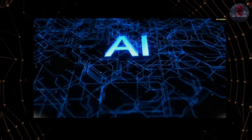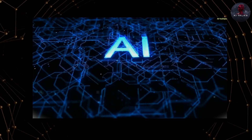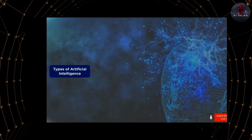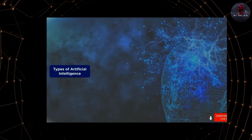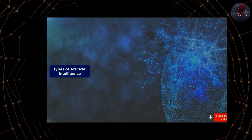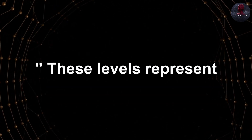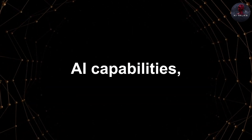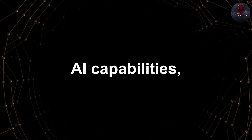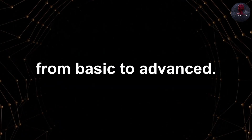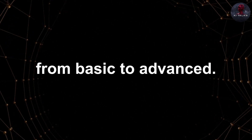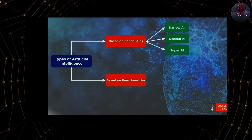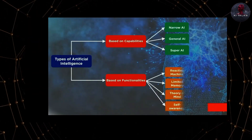AI can be categorized into several levels or stages, often referred to as levels of AI or AI types. These levels represent the varying degrees of AI capabilities, from basic to advanced. Let's proceed with the video so we can understand AI better.